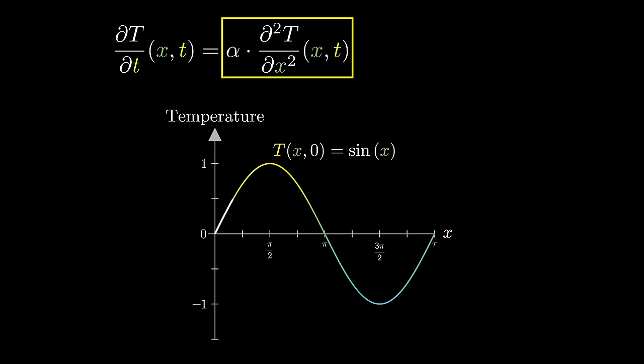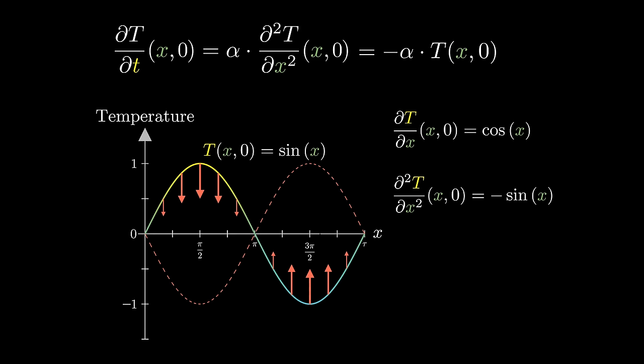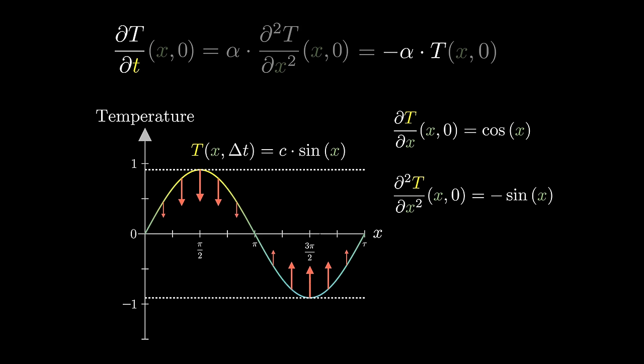The right-hand side of this heat equation asks about the second derivative of our function, how much our temperature distribution curves as you move along space. The derivative of sine of x is cosine of x, whose derivative in turn is negative sine of x. The amount the wave curves is, in a sense, equal and opposite to its height at each point. So at least at the time t equals zero, this has the peculiar effect that each point changes its temperature at a rate proportional to the temperature of the point itself, with the same proportionality constant across all points.